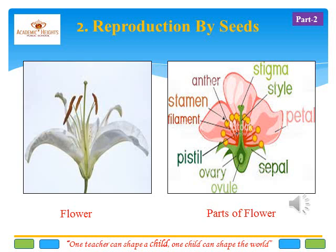Slide number 8 — reproduction by seeds. In nature, the major reproduction process takes place in the seeds. As you can see in the full picture of the flower, a flower has different parts like anther, stigma, filament, pistil, style, ovary, ovule, and sepal.